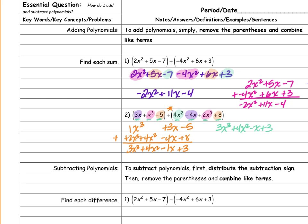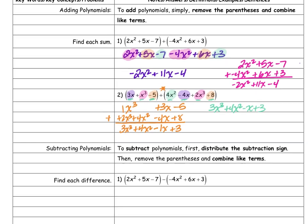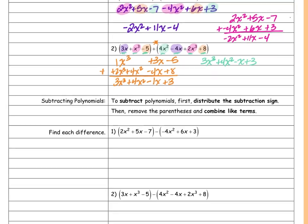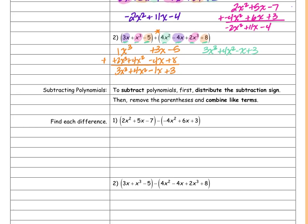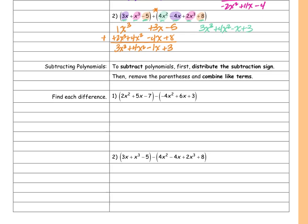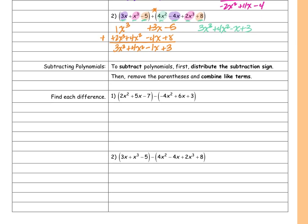We're going to go into subtracting now — it's just a little bit different. To subtract polynomials, first distribute the subtraction sign, then remove the parentheses and combine like terms.